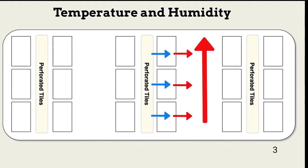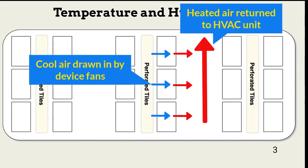The cool air is drawn in by rack device fans, and the heated air exits into a heated row. The air in the heated row cycles back to the cooling system.